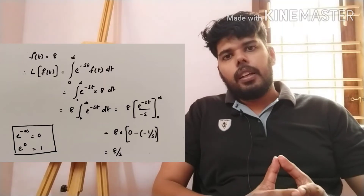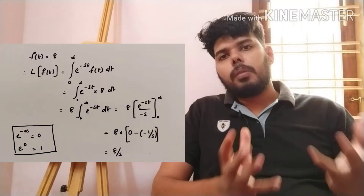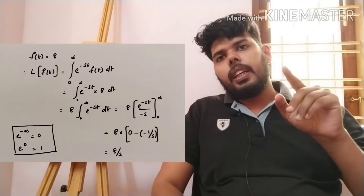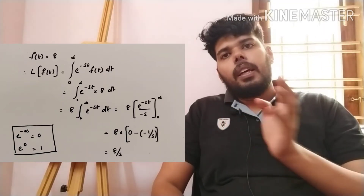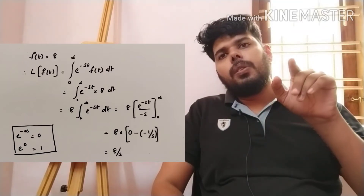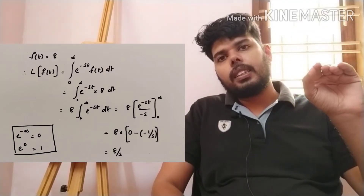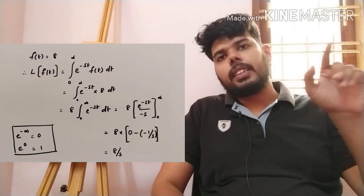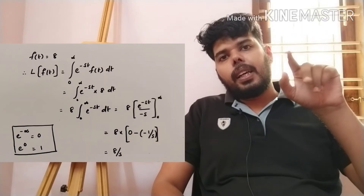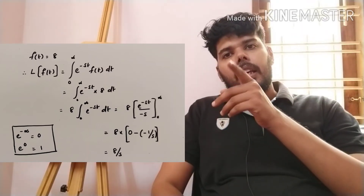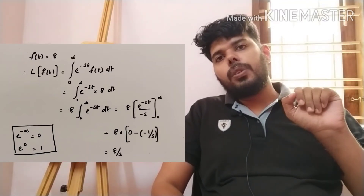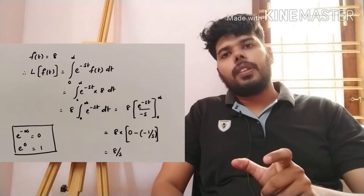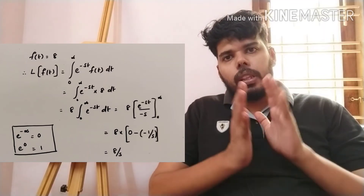Let's do an example. Therefore, L of f(t) is equal to the integral from 0 to infinity of e raised to minus st dt, which is equal to e raised to minus st divided by minus s. Then, evaluating from 0 to infinity, we get 1 divided by s. So this is the Laplace Transform result.